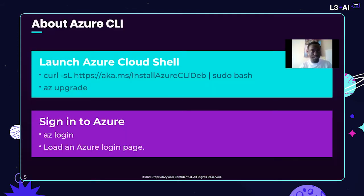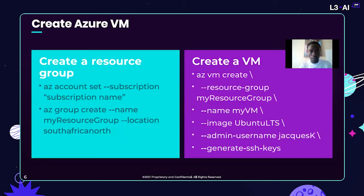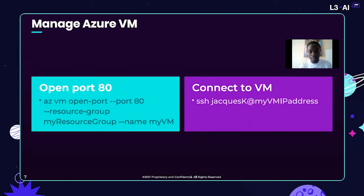For the Azure CLI, you'll have to launch your Azure CLI and sign into your Azure. After you sign in, you can proceed to create a resource group and then create a VM. To manage your Azure VM, make sure that you open port 80 and also connect to the VM.